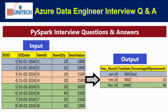Today we are going to see one more real-time interview question that was asked in PepsiCo. We have an input dataframe with sales information — sales order ID, sales order date, item code, item quantity, and item value. In the output, we want only the year-month of the sale, the total sale for that month and year, and the percentage difference from the previous month.